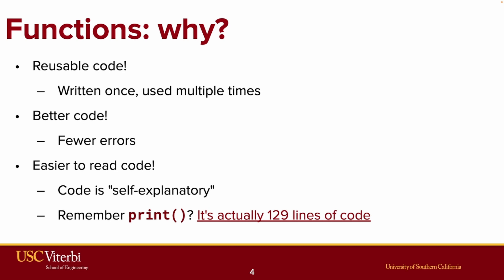It's actually 129 lines of code in C, which you don't need to worry about. It's a different programming language. But if you'd like to see what print actually does under the hood, feel free to click on that link. The point is, anytime we want to put something onto the console, all we have to do is say print and put those things that we want on the console in between those parentheses. We don't have to write every single time 129 lines of code. This is the power of functions.